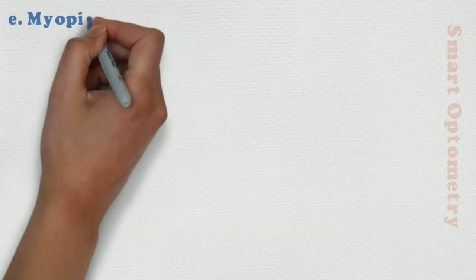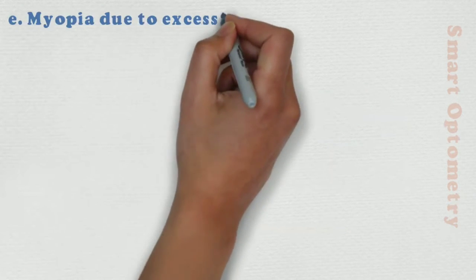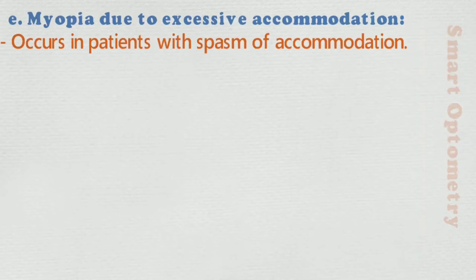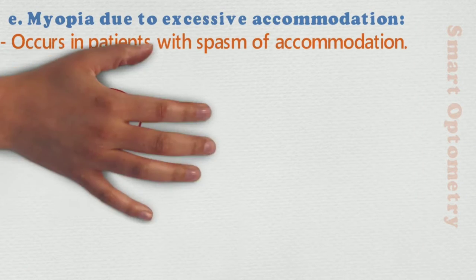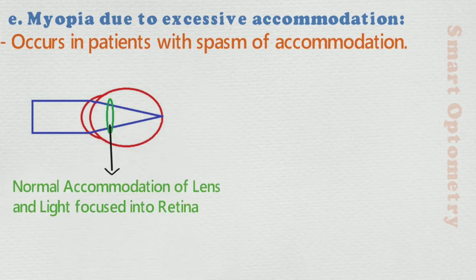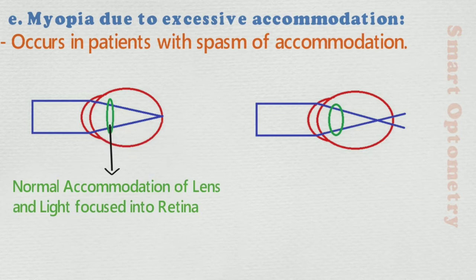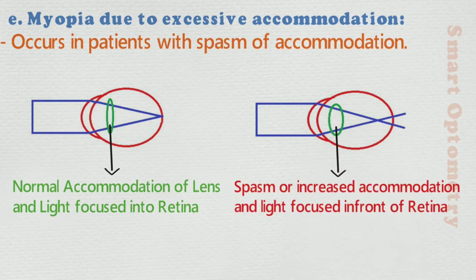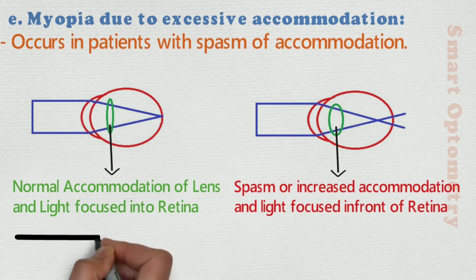E. Myopia due to excessive accommodation: it occurs in patients with spasm of accommodation. Here, in this figure, this is normal accommodation of the lens and light is focused on the retina. And here, in this figure, spasm or increased accommodation causes light to be focused in front of the retina.